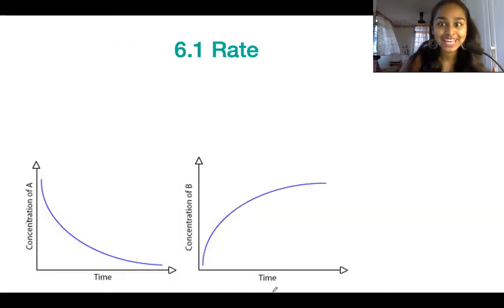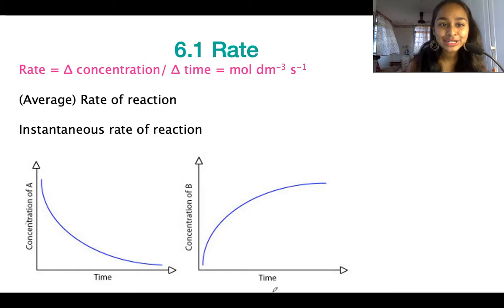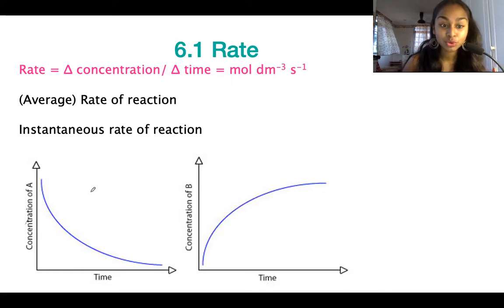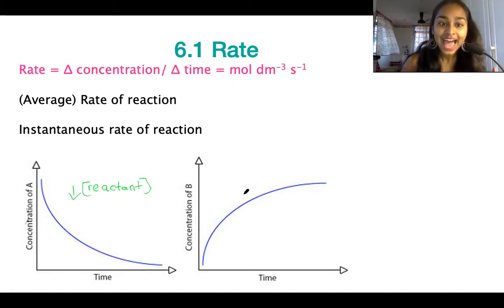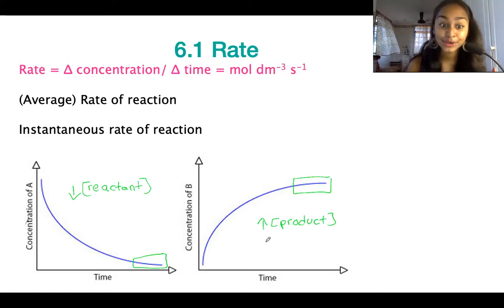Let's look at some graphs. There are two different types of rates you could be asked to calculate. The first graph shows the rate of reaction according to a reactant — as the reaction goes on, the concentration of a reactant decreases. In the second graph the concentration is increasing, so this is a product curve. Both curves plateau because at one point we run out of reactants to turn into products.